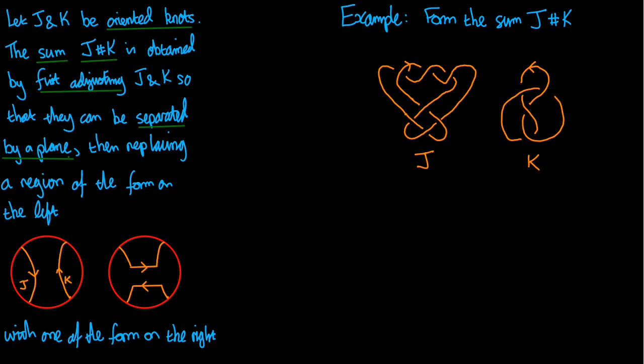Well then if I take their union something could still go wrong which is that they might still be linked together. So I have to make sure that doesn't happen and the way I do it is by pushing them far apart at first so that they can be separated by a plane. That means when I take the union they won't be linked in any way.